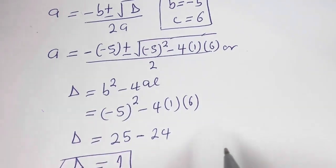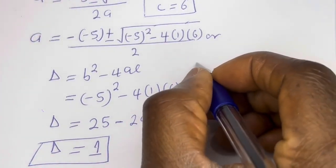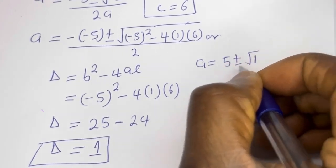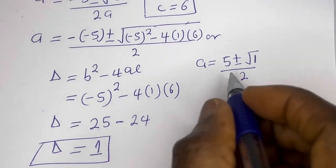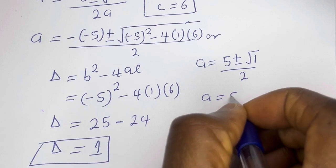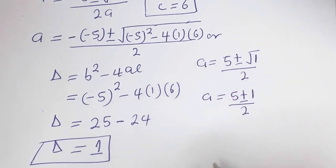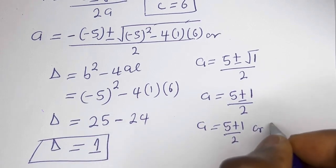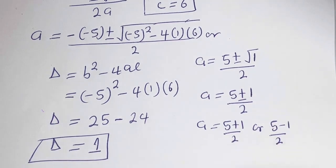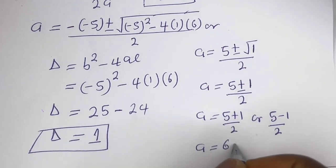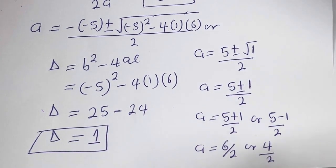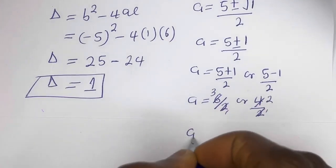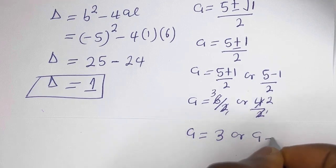Substituting the discriminant: a equals 5 plus or minus square root of 1, all over 2. Since the square root of 1 is 1, we have a equals (5 plus 1) over 2 or (5 minus 1) over 2, giving a equals 6 over 2 or 4 over 2. Therefore, a equals 3 or a equals 2.